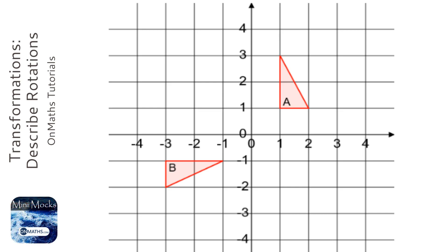So it's definitely a rotation. So what I do is get my tracing paper out and draw shape A onto the tracing paper, and I basically just try a few different points.